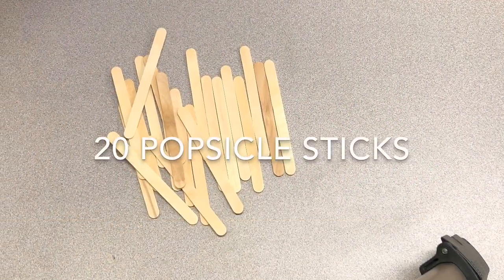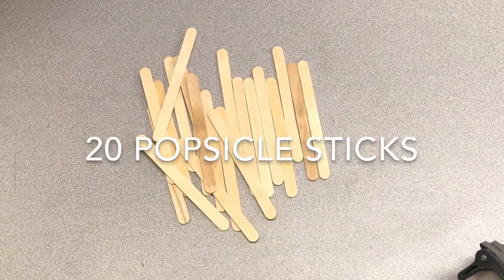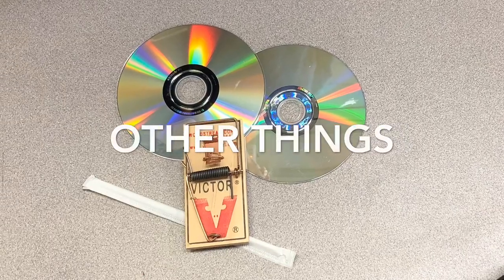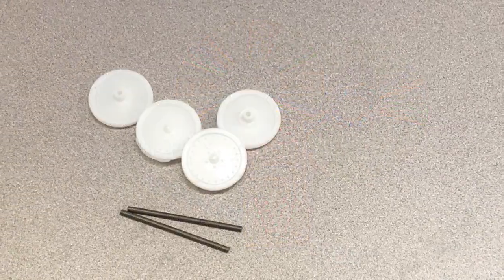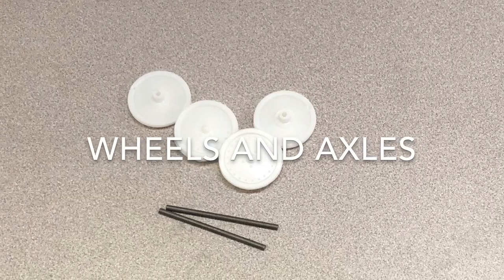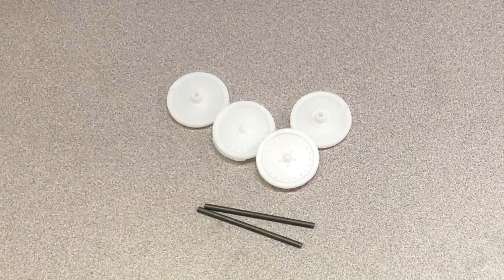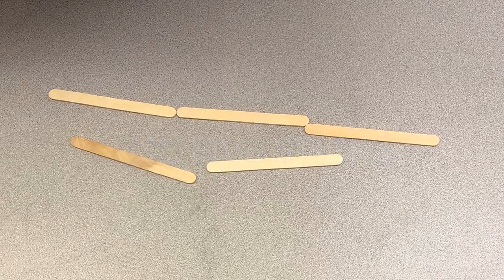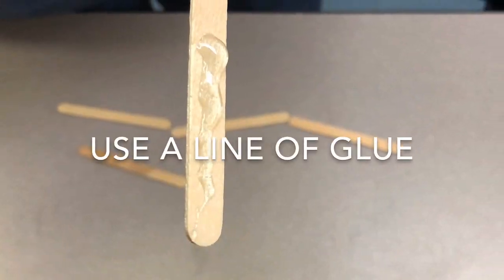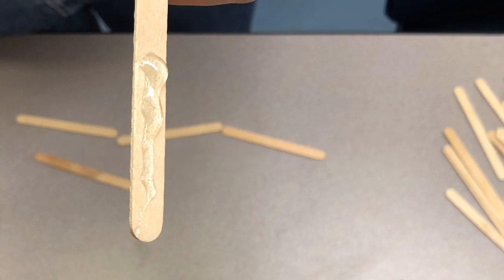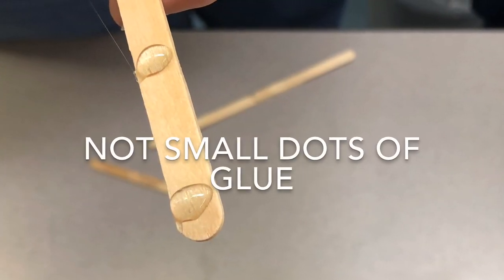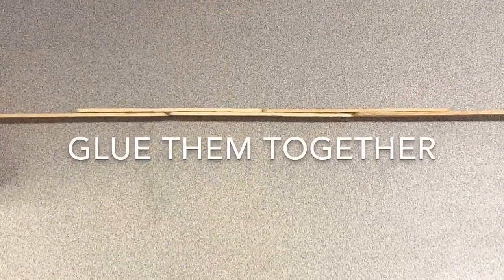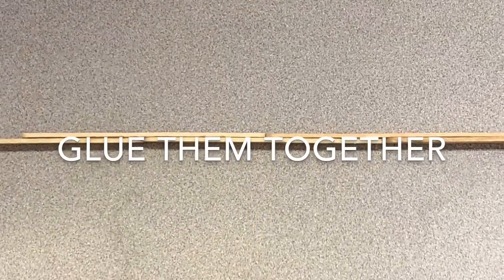Welcome to making a mousetrap car. Start with a few popsicle sticks and gather your other supplies, a couple of wheels and axles. Take five popsicle sticks and glue them together like bricks. Make sure you're using lines of glue instead of dots of glue because the dots will not hold very well.